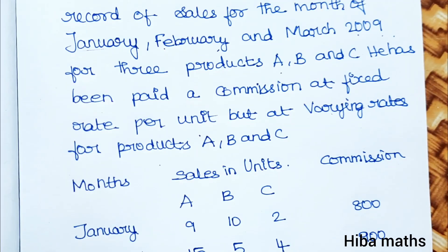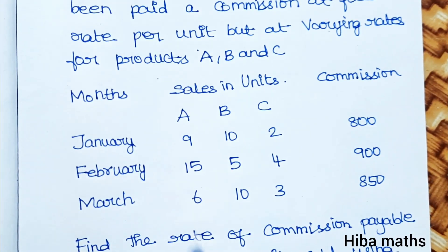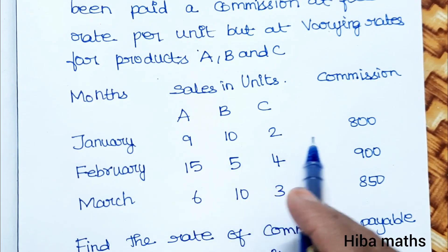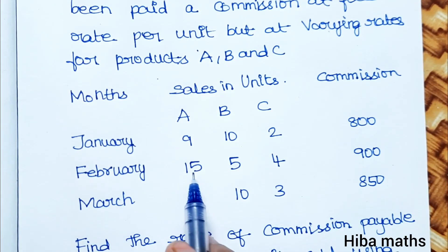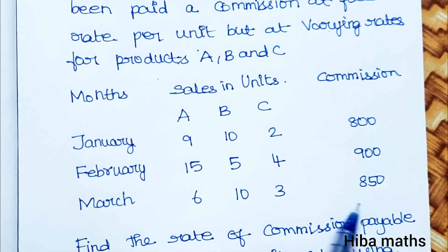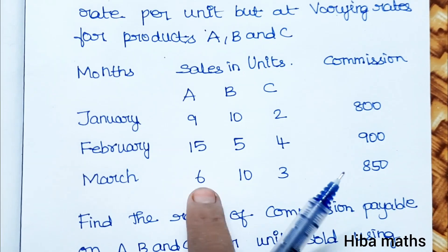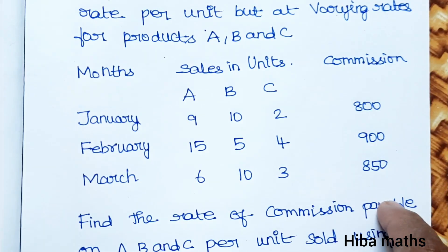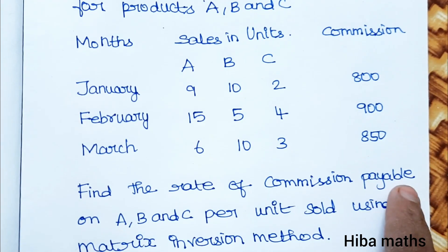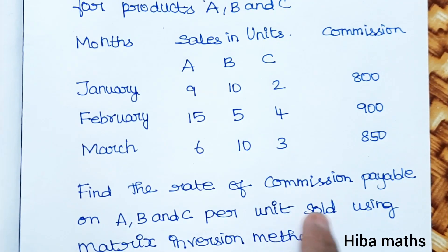We will add one table: Month, Product A, Product B, Product C, Commission. For February and March, the commission values are 610, 3, and 850. This is the resultant matrix. Find the rate of commission payable on A, B, C per unit sold.